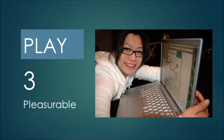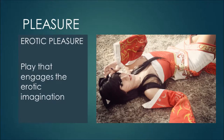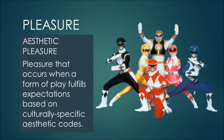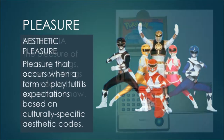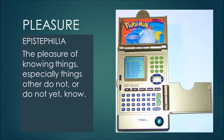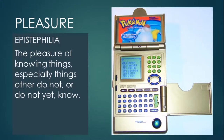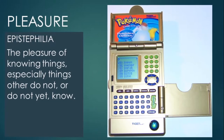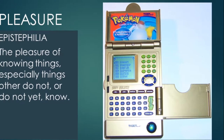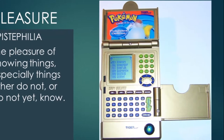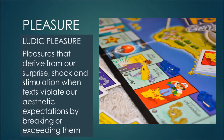Third, play is usually deemed by its participants to be pleasurable, and these pleasures can take many forms. Erotic pleasure is play that engages the sensual and erotic imagination. Aesthetic pleasures occur when the form of play fulfills expectations based on culturally specific aesthetic codes. Epistophilia is the pleasure of knowing things, especially things that other people do not know or do not know yet. In my own ethnographic work, I found that a lot of kids playing Pokémon enjoyed the knowledge that came with mastery of all the details of the game. Ludic pleasures derive from surprise, shock, and stimulation when texts violate our aesthetic expectations by breaking or exceeding them.